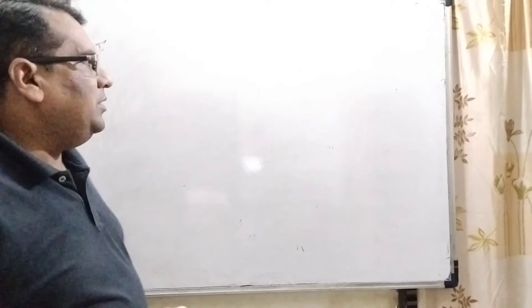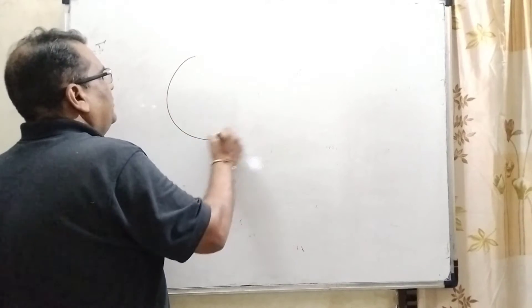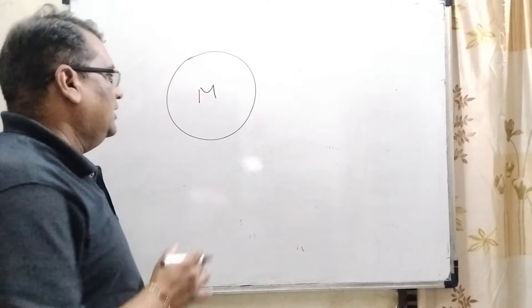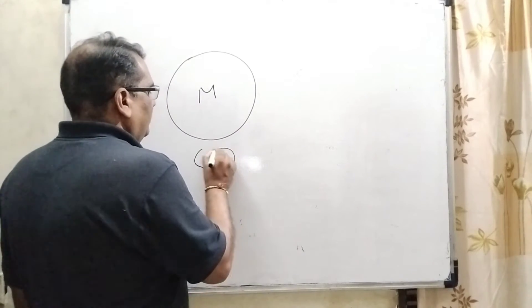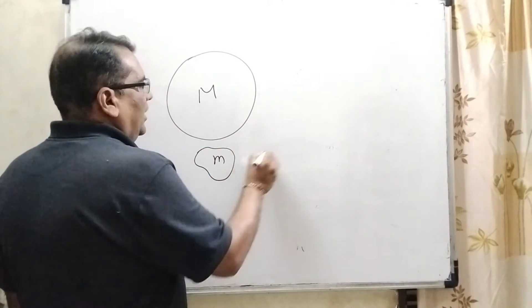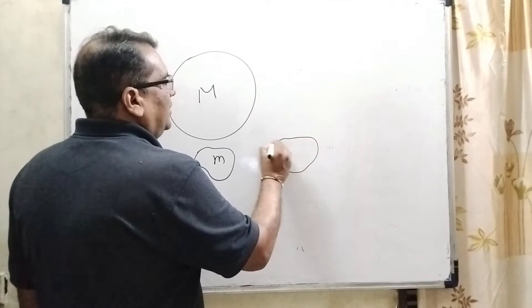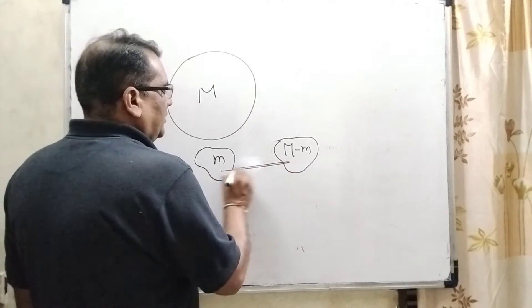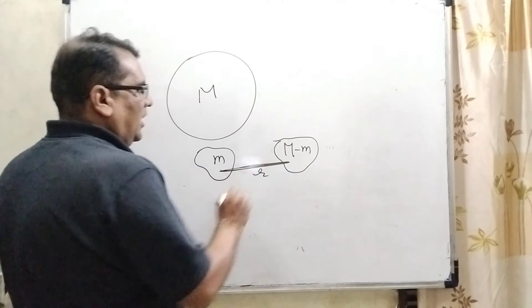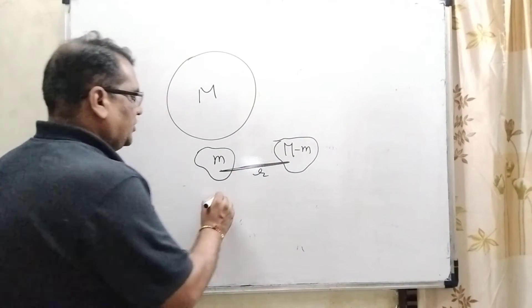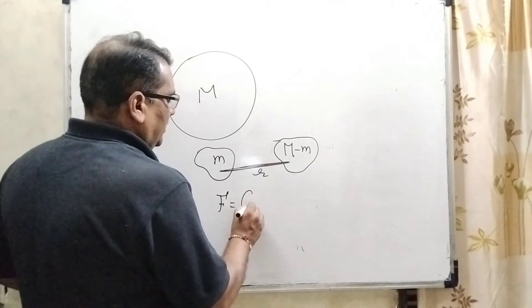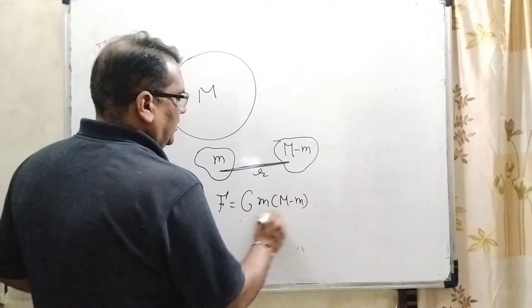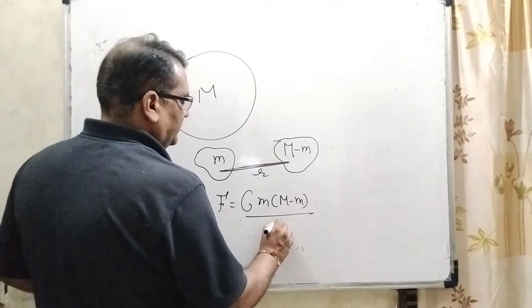Now what is the question? Here we have given a body which having the mass is capital M, and it is splitting in two parts. Let us consider first part which having the mass is small m, and another part which having the mass is capital M minus small m.